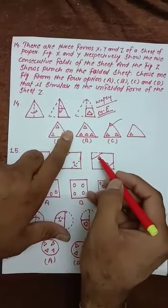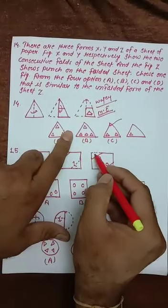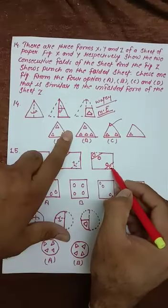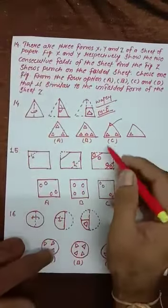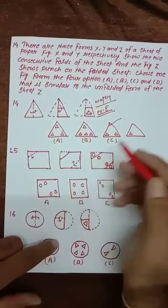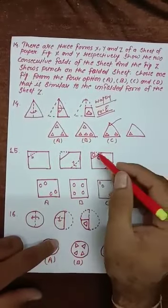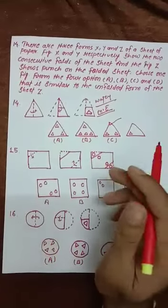...will be a water image of zero here. It will be zero, zero. Since there was no other fold available, only this part will be available. So this will be our answer.